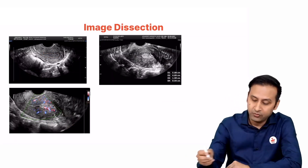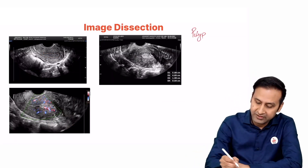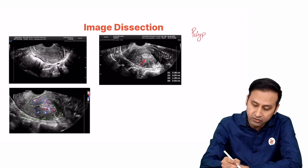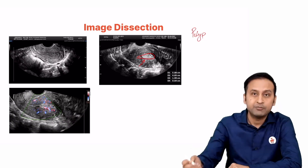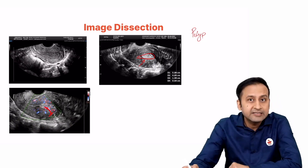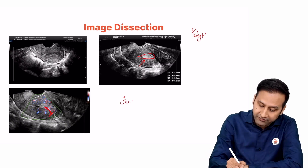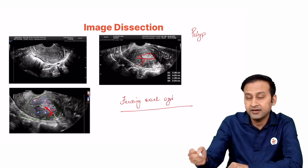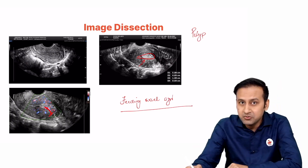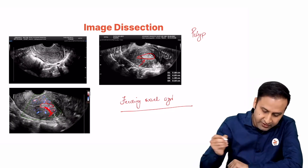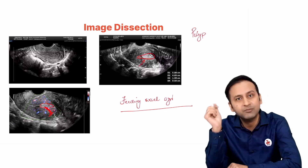Let us look at a few other images of an endometrial polyp. Again, there is another echogenic lesion placed inside the endometrial cavity causing widening of the endometrial cavity. On colour Doppler, we can see a vessel running from the posterior myometrium and extending within the lesion. This sign is called the feeding vessel sign because a vessel is feeding this lesion.